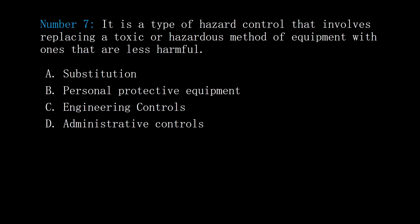Number 7. It is a type of hazard control that involves replacing a toxic or hazardous chemical, method, or equipment with ones that are less harmful. A: substitution. B: personal protective equipment. C: engineering controls. D: administrative controls. Answer: A, substitution.